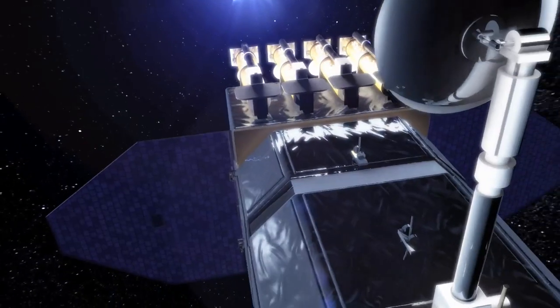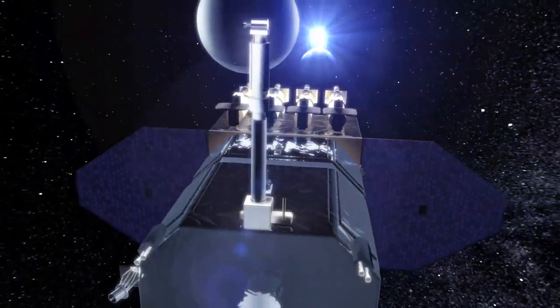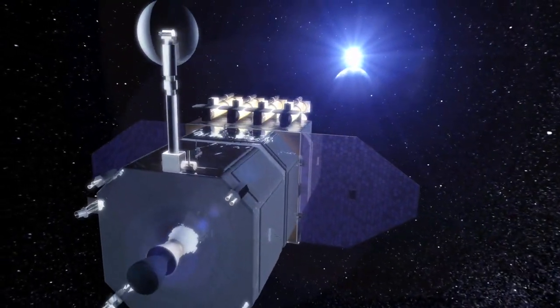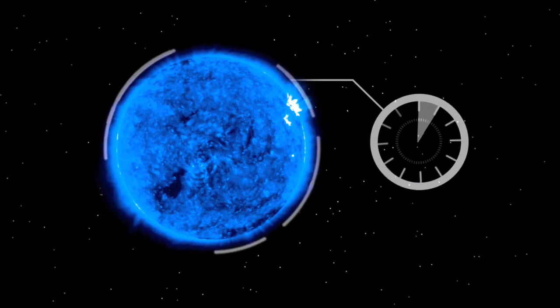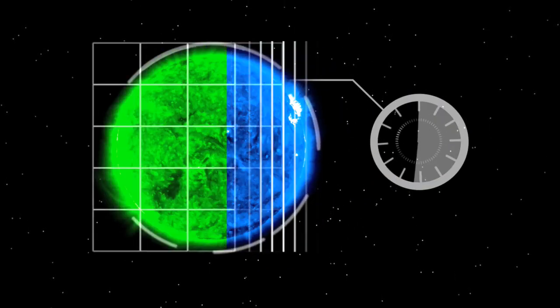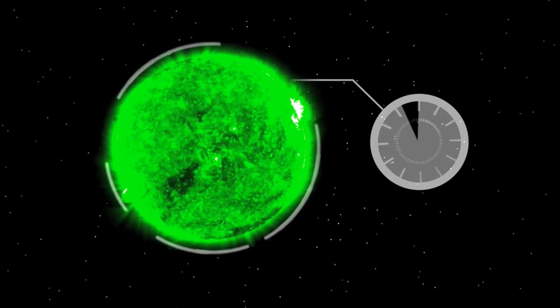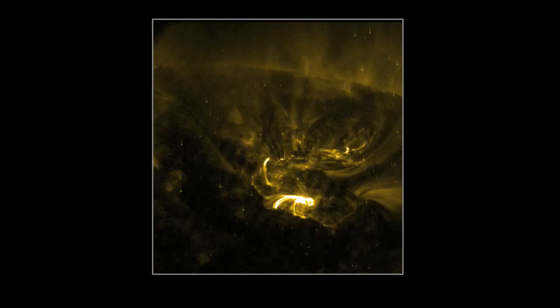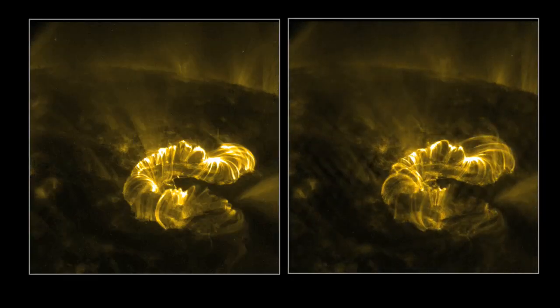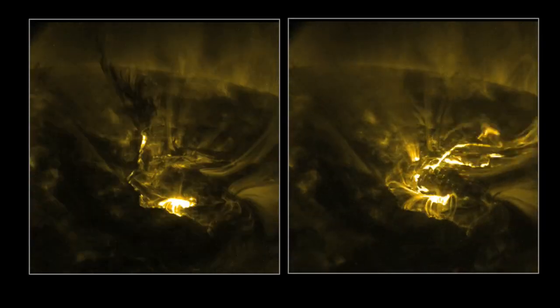But the most important thing is that we're going to take pictures very frequently. The best we've done so far with full disk images of the Sun is every 3 minutes, and we're going to take them every 10 seconds. That's a lot faster. We'll be able to see things that happen on the Sun very quickly that right now we skip. We just miss. It's like we look at the tops of the mountains and we miss the valleys in between.